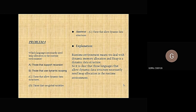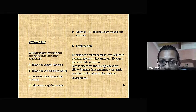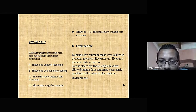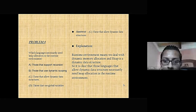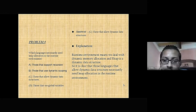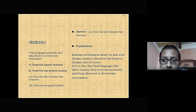Problem 4: Which languages necessarily need heap allocation in the runtime environment? The options are: A) those that support recursion; B) those that use dynamic scope; C) those that allow dynamic data structures; D) those that use global variables. The answer is C — those that allow dynamic data structures — because runtime environment deals with dynamic memory allocation, and heap is a dynamic data structure. It is clear that languages that allow dynamic data structures necessarily need heap allocation in the runtime environment.